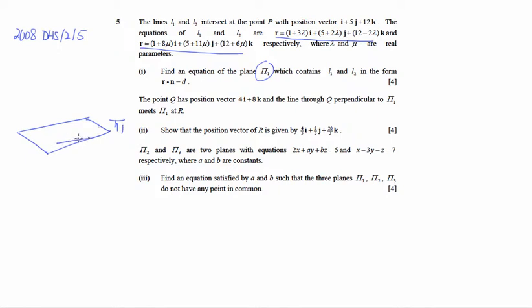There is a plane π1, with line L1 and line L2 lying within it. To find the equation of the plane, we need the normal and a point. The point is easy because we have two lines and therefore two points we can use. The difficulty is getting the equations of L1 and L2 into a useful form.